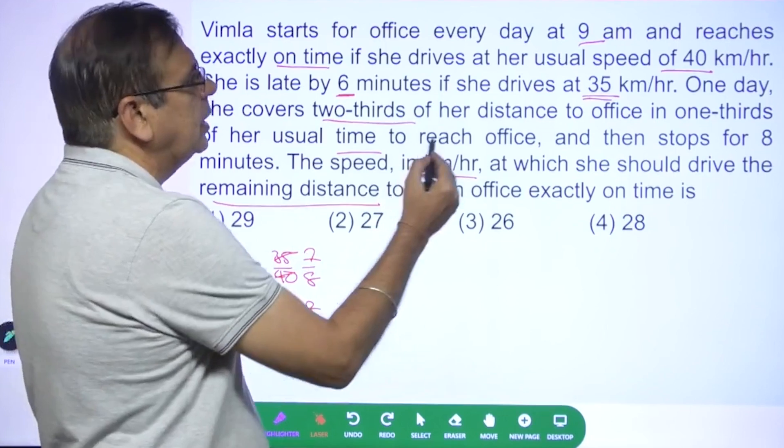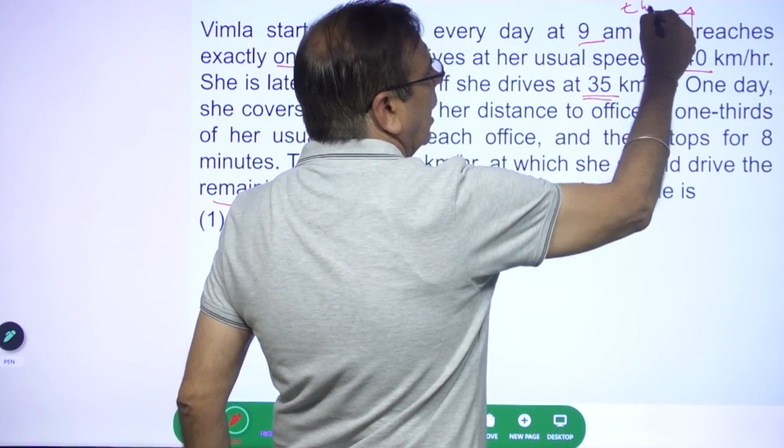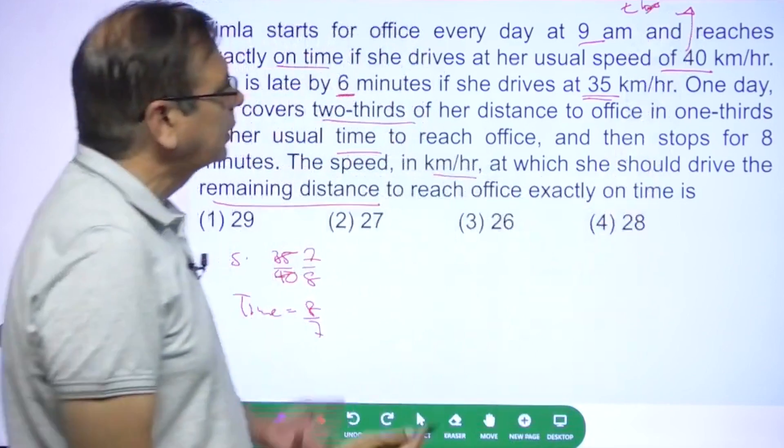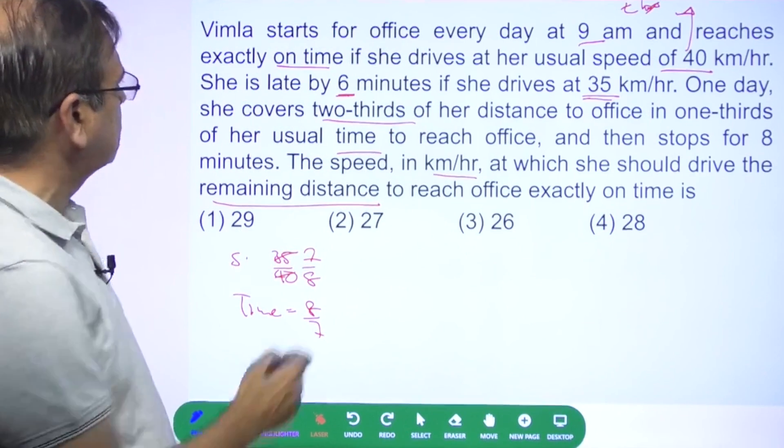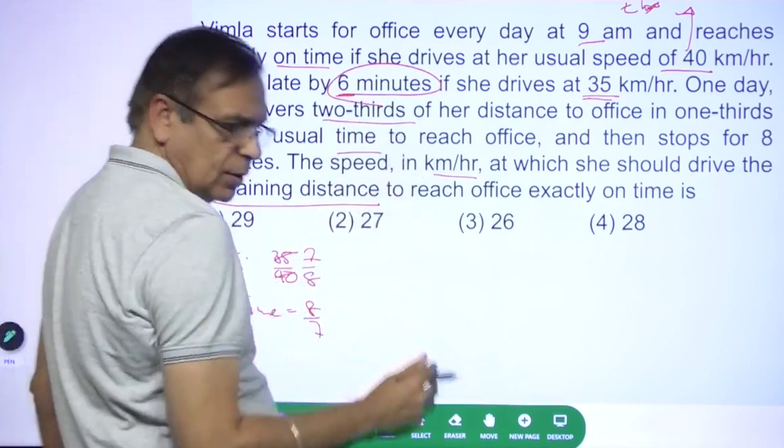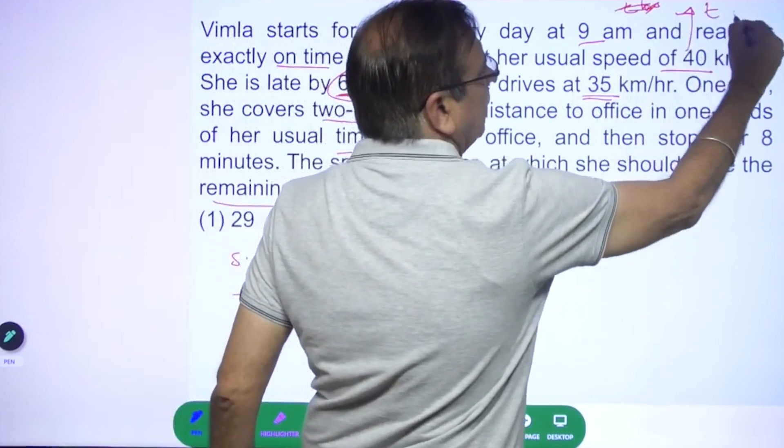So if the original time was T at the speed of 40 kilometers per hour, if she was taking T hours or T minutes, whatever you want to call it. This is given in minutes so I'll take it T minutes. Because this data is in minutes, I'll say she was taking T minutes.